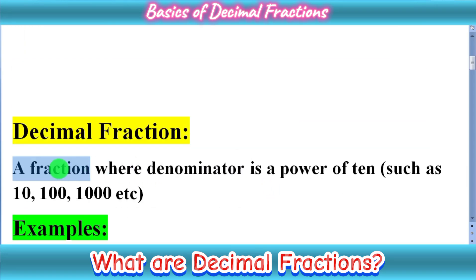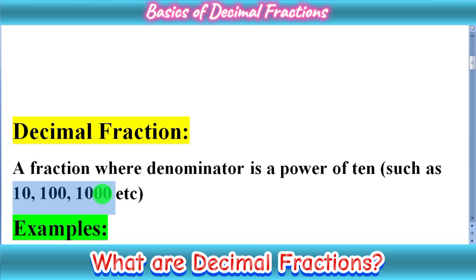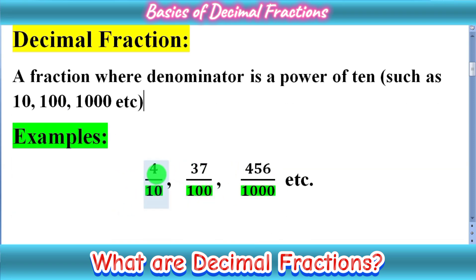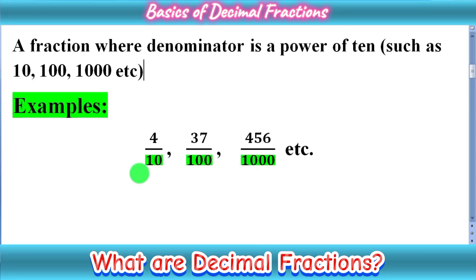What are decimal fractions? A decimal fraction is a special type of fraction — simply a fraction where the denominator is a power of ten, such as ten, hundred, thousand, etc. Power means we multiply ten times ten to get hundred, or ten times ten times ten, which is called thousand. A fraction which has a denominator like these numbers is called a decimal fraction. For example: 4/10, 37/100, and 456/1000 are all called decimal fractions. This is the basic structure of a decimal fraction.